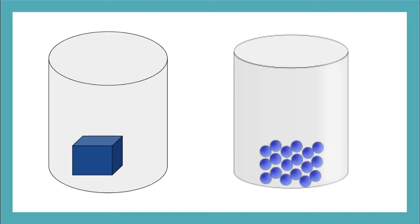Solids act the way they do because the atoms and molecules that make up their matter are tightly packed together, usually in a pattern, and they hardly move. They may vibrate or jiggle, but for the most part they are fixed in place. That is why it is so hard to compress or squish a solid.